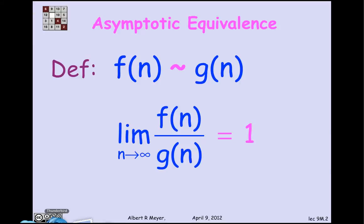The first of these relations is the simplest one. It's called asymptotic equivalence or asymptotic equality. This tilde symbol is read as asymptotically equal to. So f(n) is asymptotically equal to g(n) if and only if the limit of the quotient f(n) over g(n) is 1.